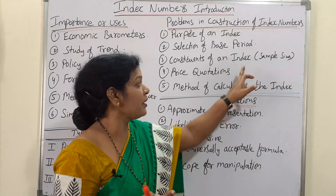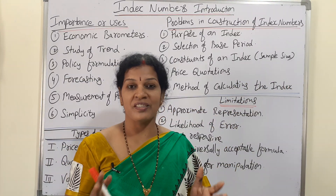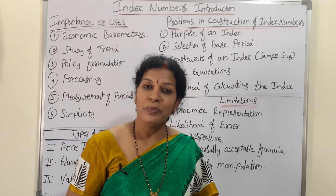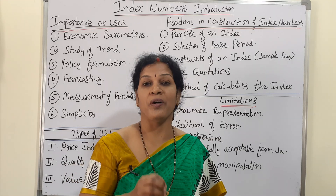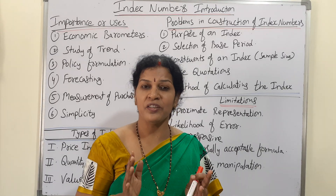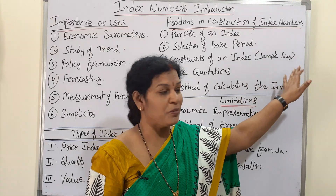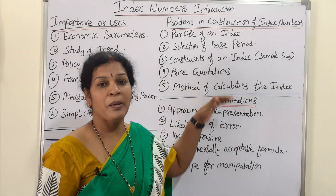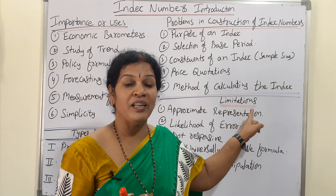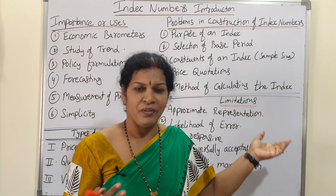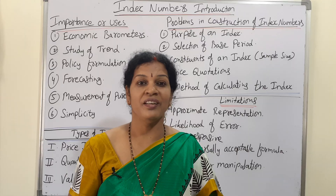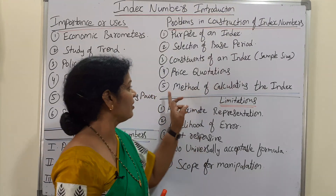The third problem is constituents of the index — what sample size to take: 5 years, 4 years, 10 years. Selection of sample size is a very big problem. The sample should not be very big nor too small — it should be medium and fulfill the purpose of calculating the index. That is very important. Similarly, price quotations are also a problem — whether prices are increasing or decreasing and what kind of adjustments are to be done is quite difficult to estimate without proper knowledge.